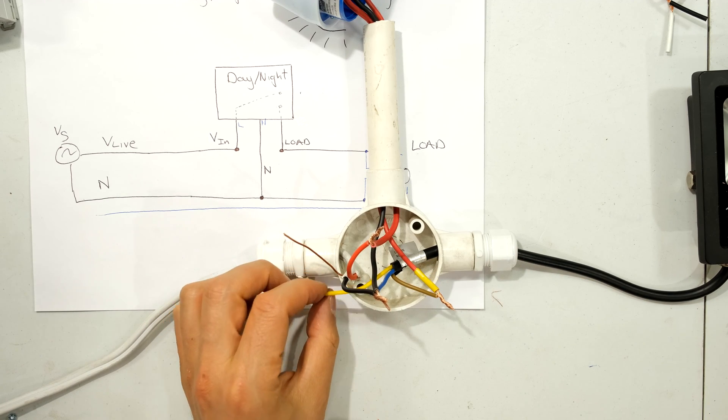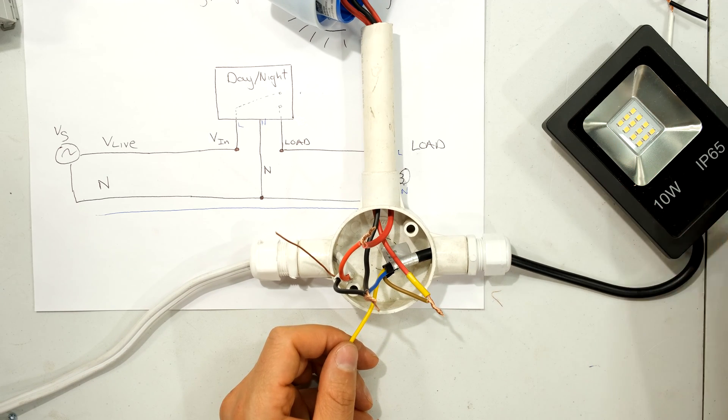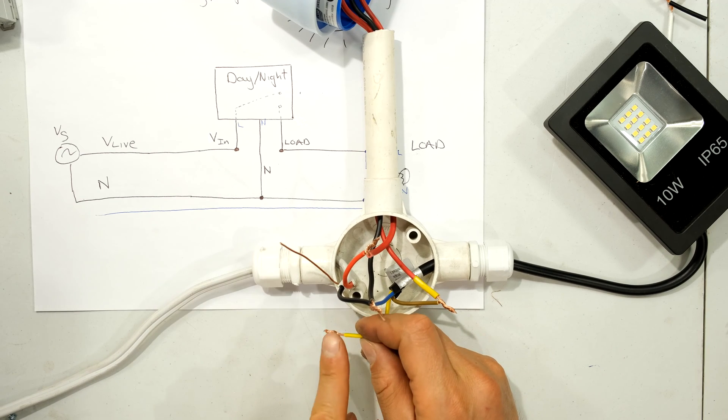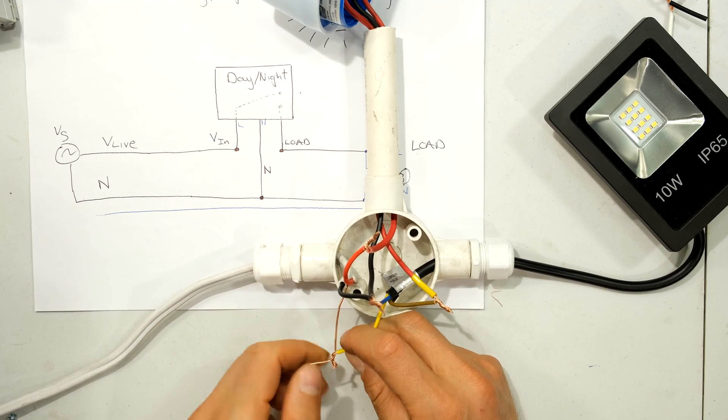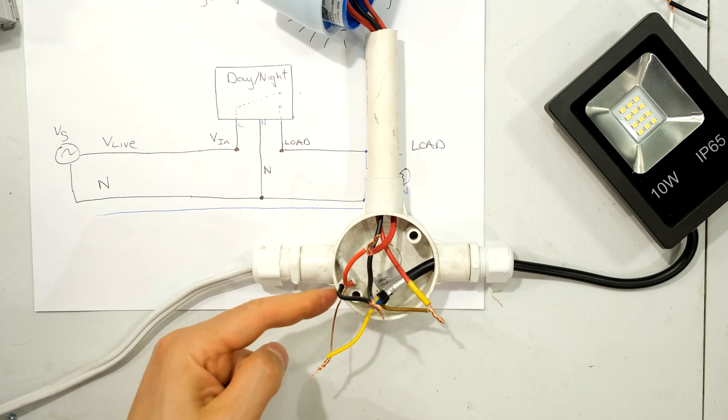Now you may notice there's an earth wire sitting here. And the reason why there's this earth wire is because the day-night switch has this chassis or this metallic surface. So I need to connect the earth to the earth of my supply. So there we go. I now have my earth connecting to the earth that came from my supply.